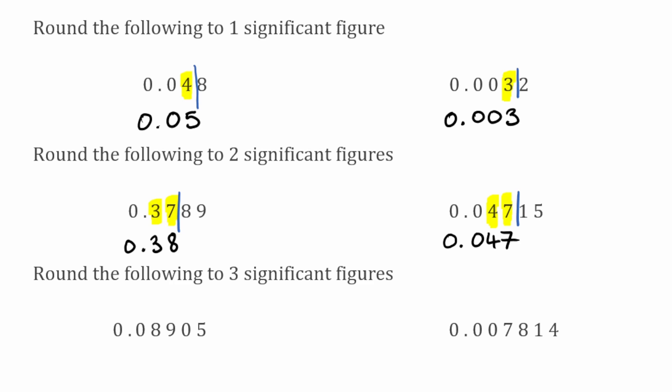For these final few examples we want to round to three significant figures. For this first example our first significant figure would be the eight, nine would be our second significant figure, and the zero would be the third significant figure. I draw my line straight down and look at the digit on the right — because we've got a five we're going to round the previous digit up, so the zero would actually round up to a one. Copying these digits down: zero point zero eight nine, and the zero has rounded up to a one. So that would be 0.0891.